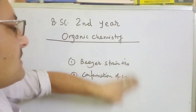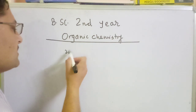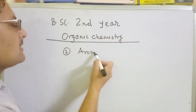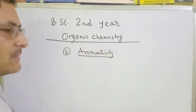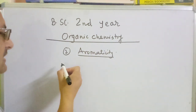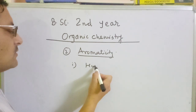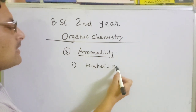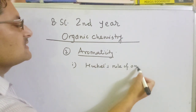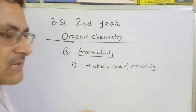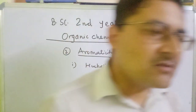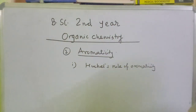In the second chapter, we have aromaticity. The second chapter is aromaticity. Aromatic compounds are called aromaticity. The first step is the Hückel rule of aromaticity. What is the Hückel rule? How to prove the Hückel rule? What is the Hückel rule of aromatic compounds? Why should an aromatic compound follow the Hückel rule? This is a theoretical idea.